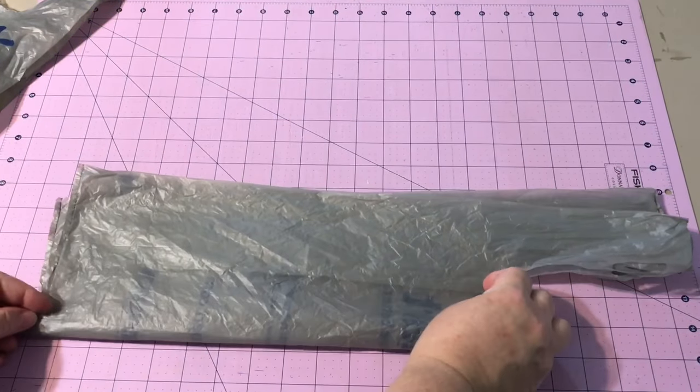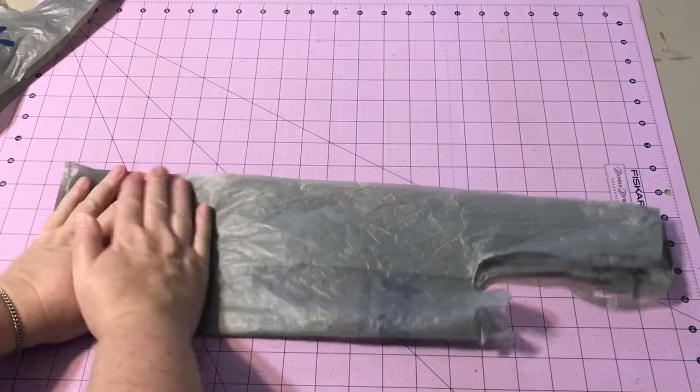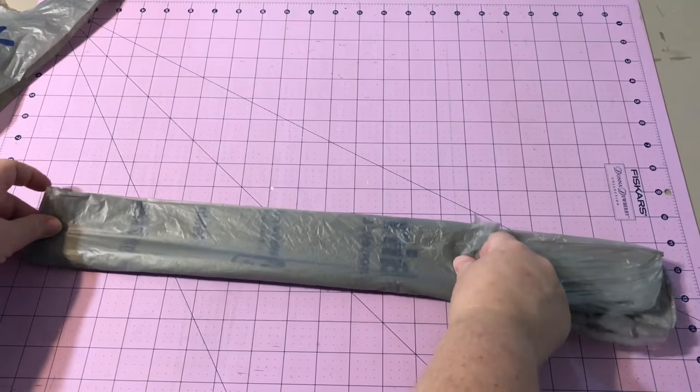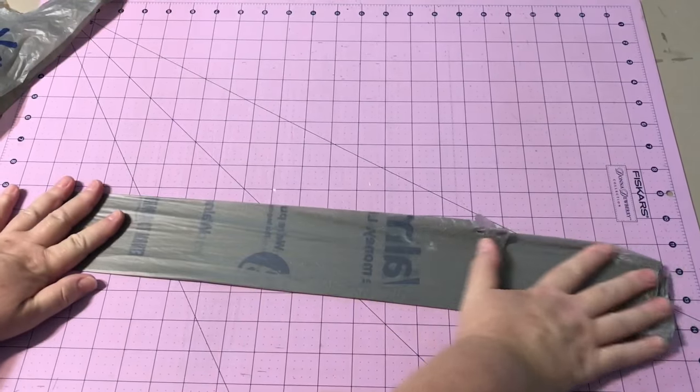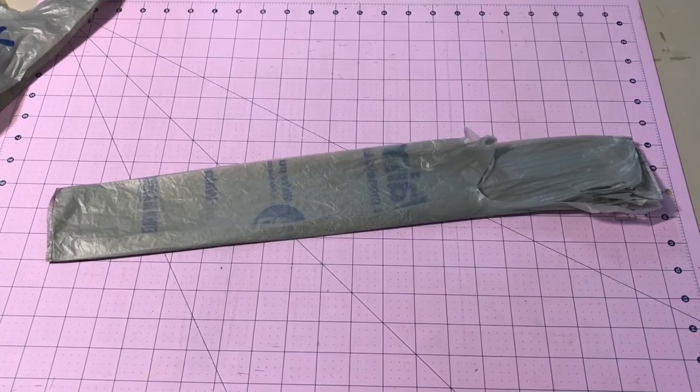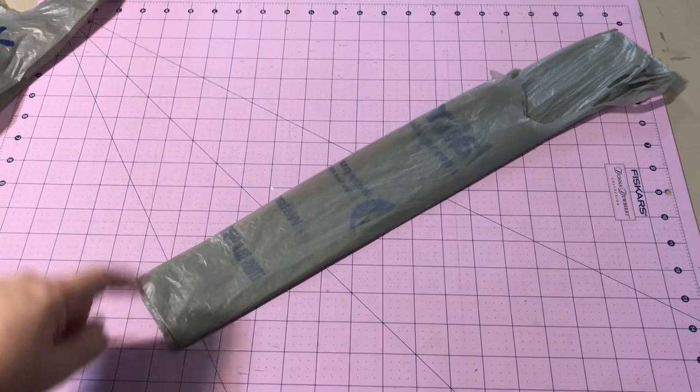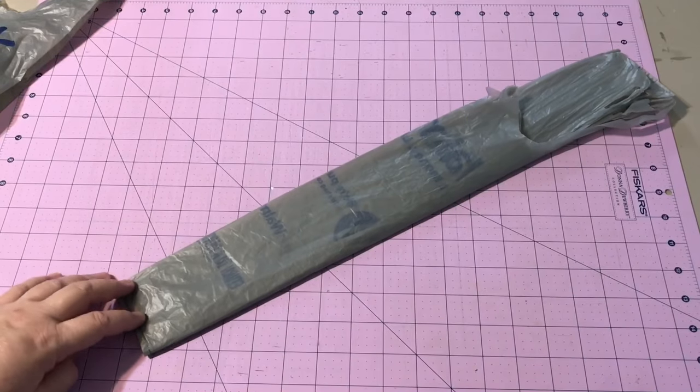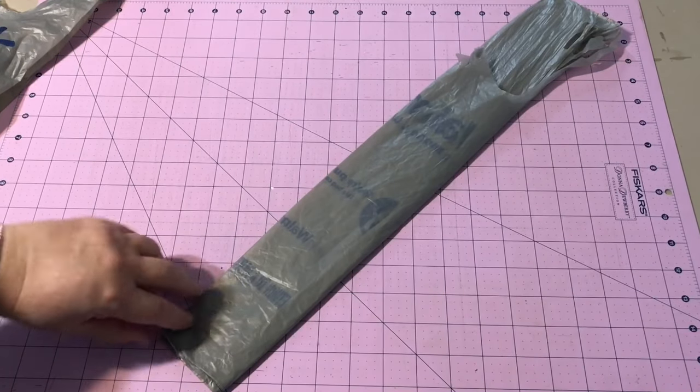Fold it in half, smooth some of the air out, take this section fold it over, smooth the air out. Easy easy. Then we're gonna start at the end opposite the handle - the handles are the messy sections so it kind of moves around and it's hard to fold from there. It can be done though.